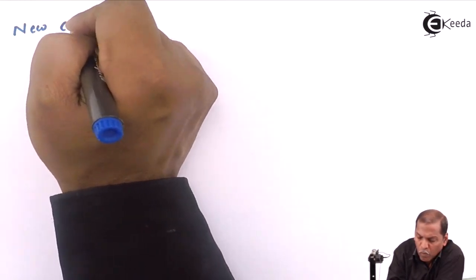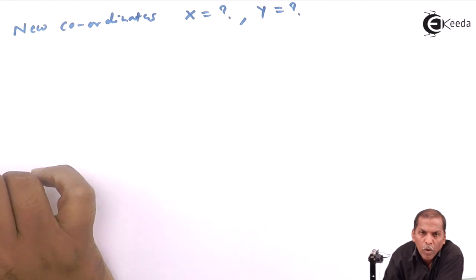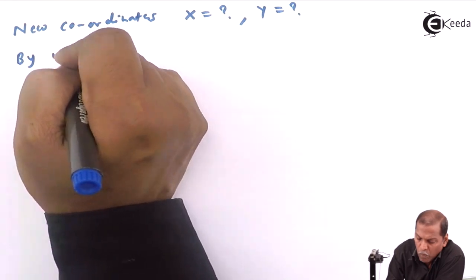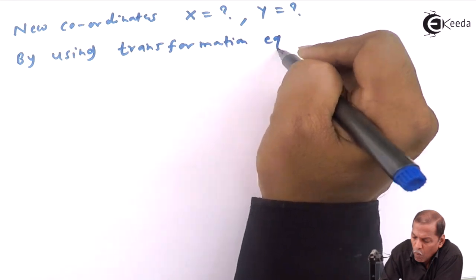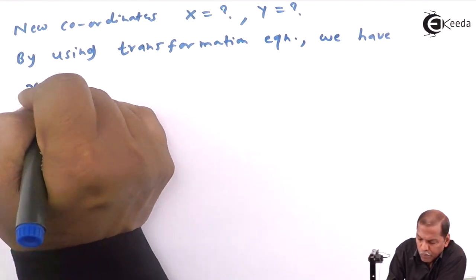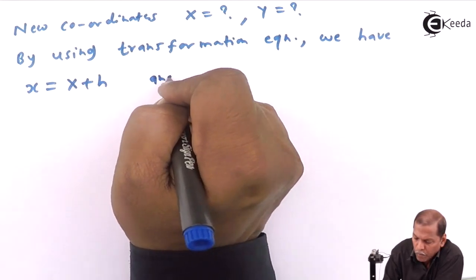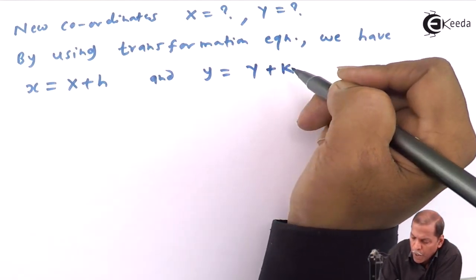Now we have to find the new coordinates, that is capital X and capital Y. By using the transformation equation, we have: small x is equal to capital X plus h, and small y is equal to capital Y plus k.